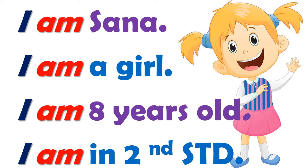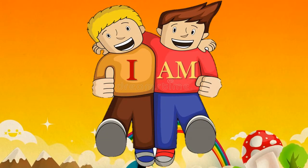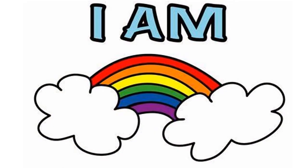Students, did you notice that in all these four sentences the word 'am' is always with the word 'I'? You know, the words 'I' and 'am' are like best friends — they are always written together. So students, 'am' is always used with 'I'.